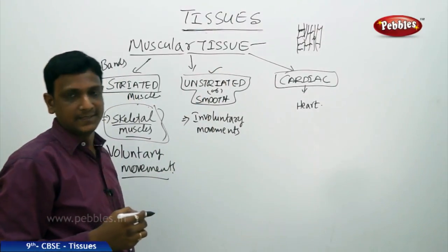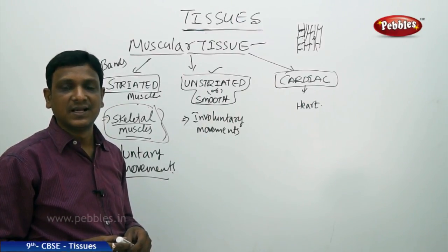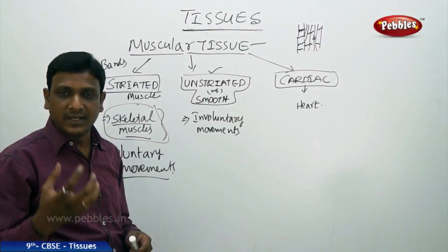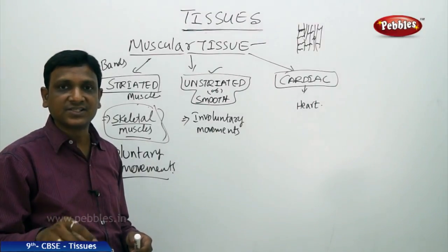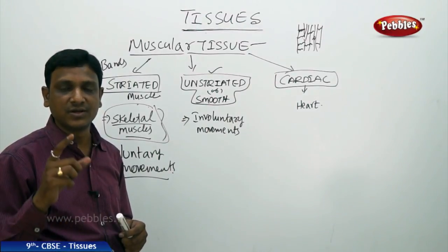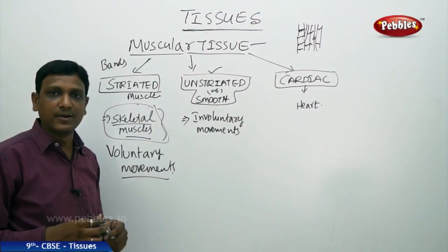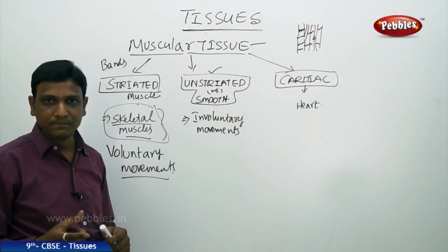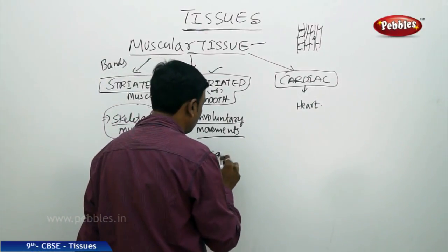The next type is unstriated or smooth muscle, found in inner parts of the body like the lungs, eyelids, iris, and digestive system. Your stomach churns food during digestion without any instruction from you — these are involuntary movements, not under your will. Different movements go on in your body to carry out various processes without requiring your decision. Those are called involuntary movements, found in the digestive and respiratory systems.